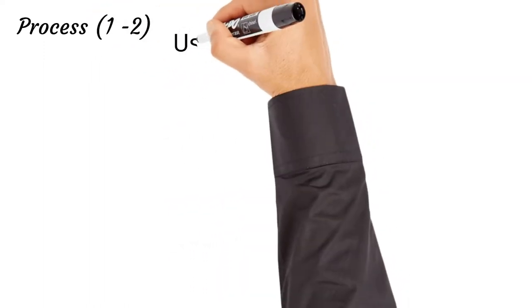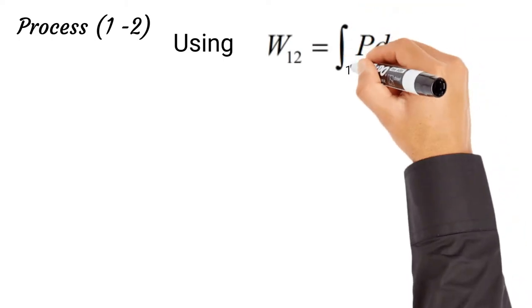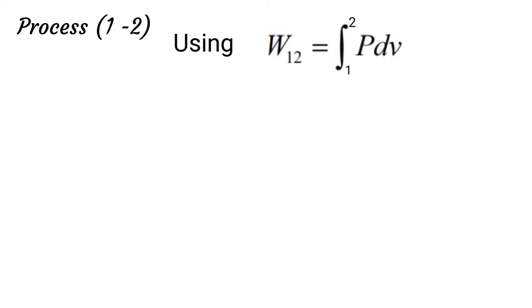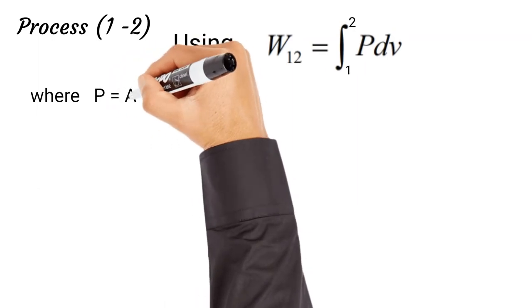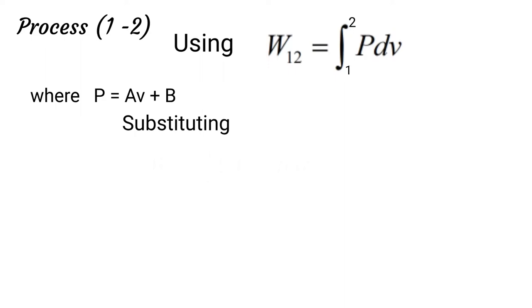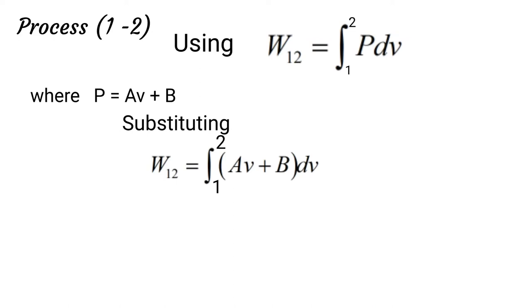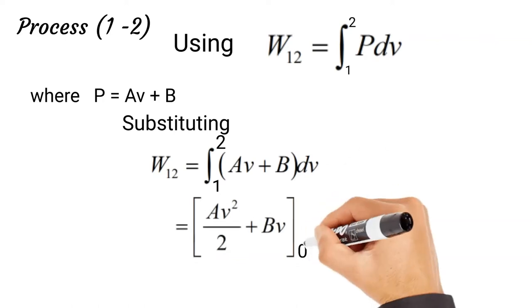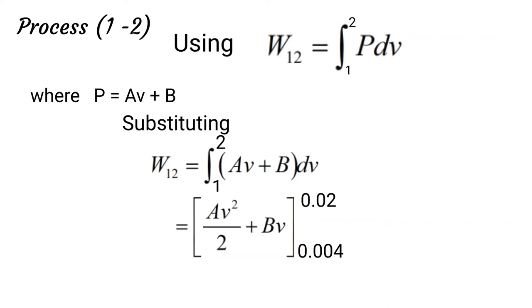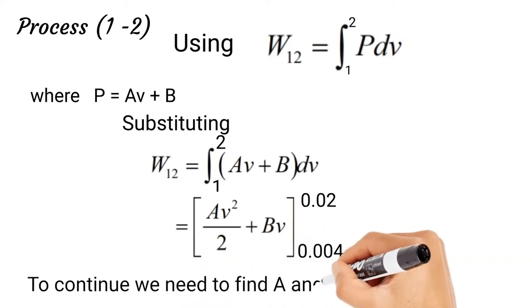Now let's calculate the work in each process. For process 1→2, we use the formula W₁₂ = ∫P dV from V1 to V2, where P = AV + B. Substituting, W₁₂ = ∫(AV + B) dV from V1 to V2. Integrating AV + B gives AV²/2 + BV. The limits are 0.04 to 0.02. At this stage we need to find the values of A and B before we can continue.